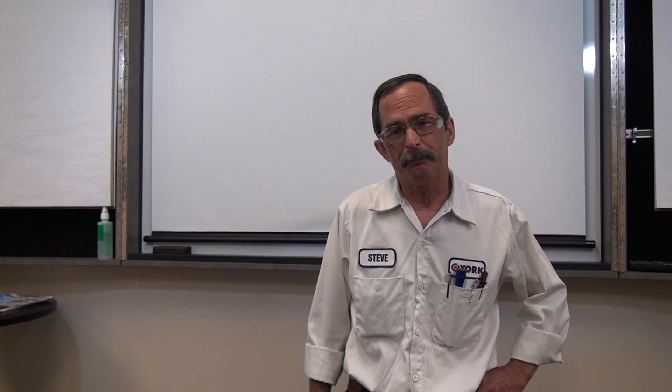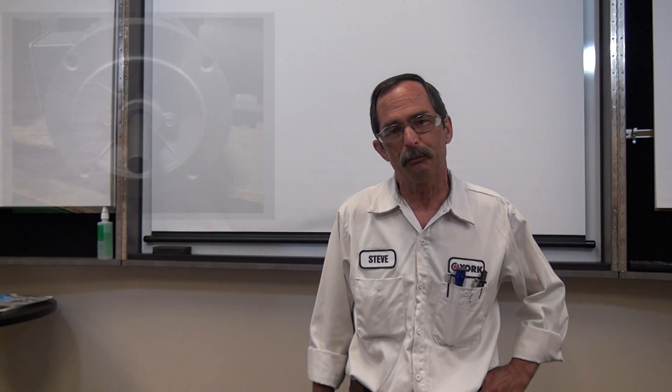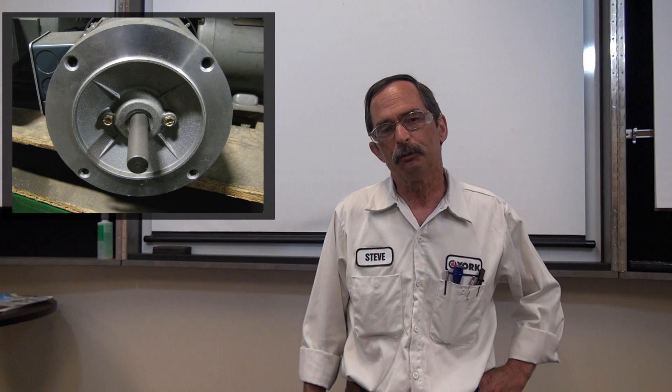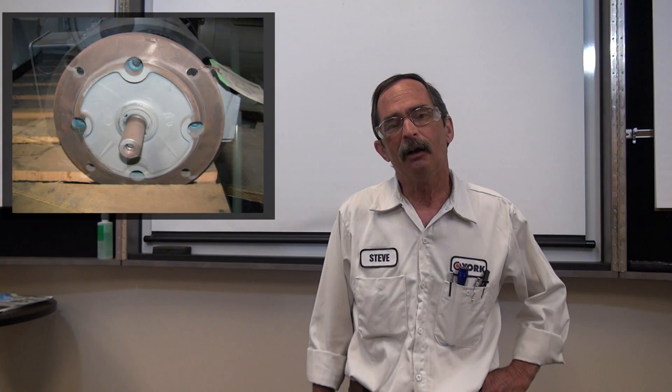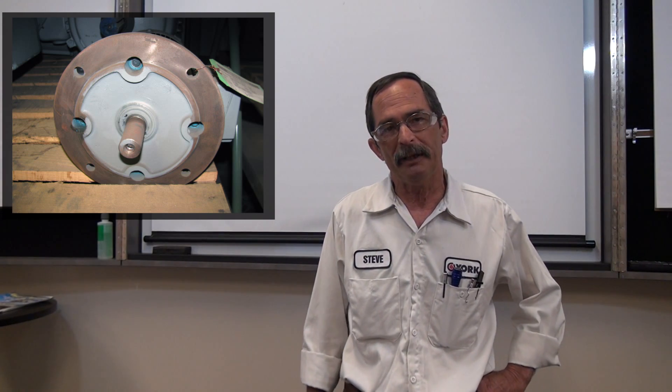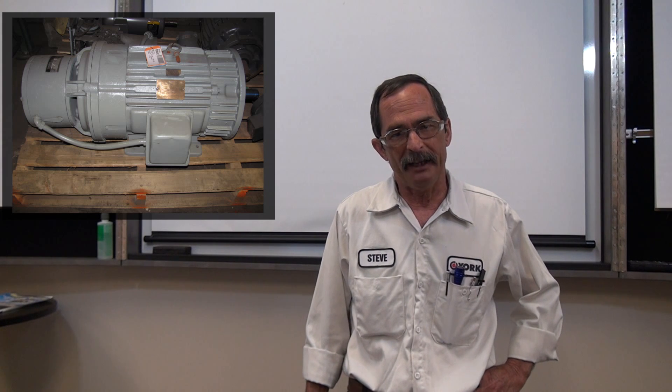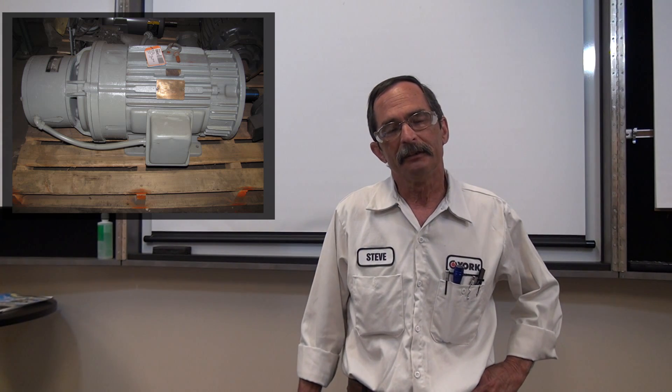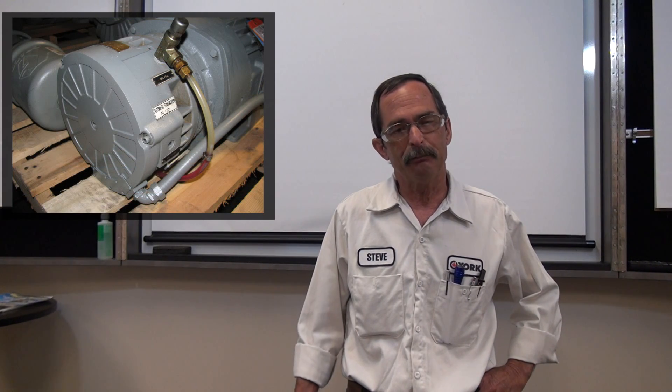Back in the day, the motor manufacturers would put C faces on, D flanges, brakes, and all this would be specified on the actual motor nameplate. Now the way manufacturers do it is they sell the OEMs, the original equipment manufacturers, and the motor shops the actual C flange, D flange, or brakes, and those have to be modified by the OEM.